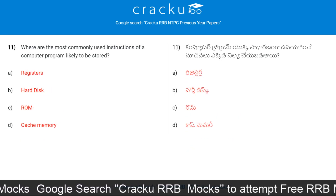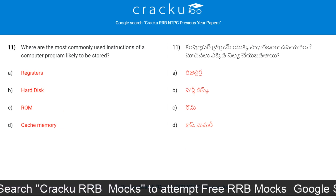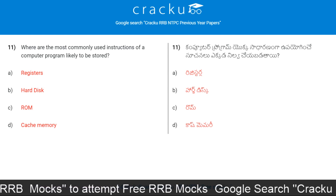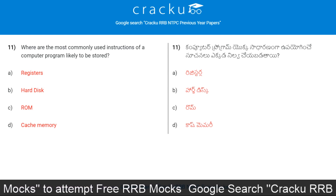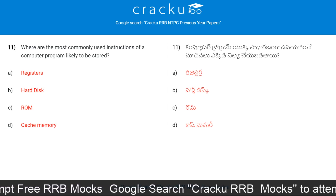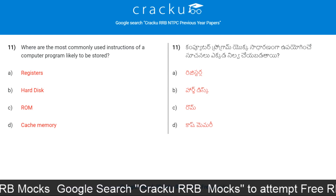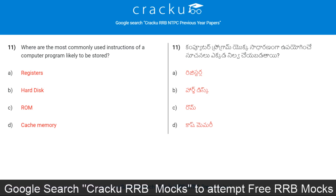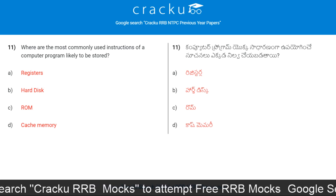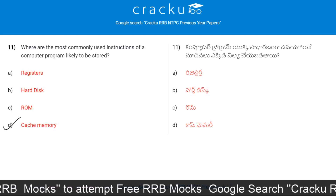Next question. Where are the most commonly used instructions of a computer program likely to be stored? Registers, hard disk, ROM, or cache memory. The correct answer is Option D, cache memory.